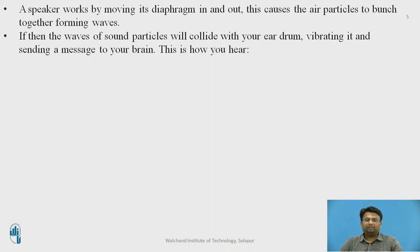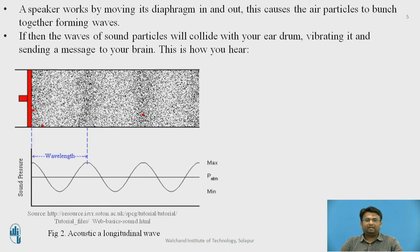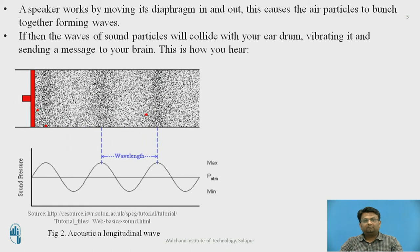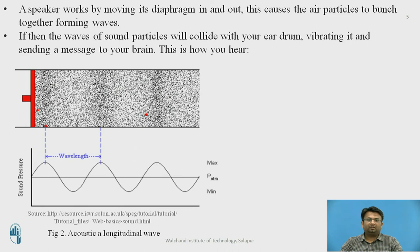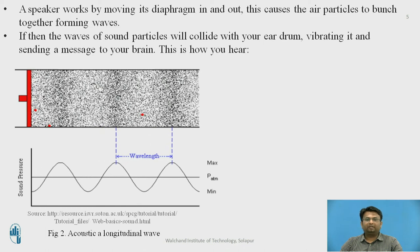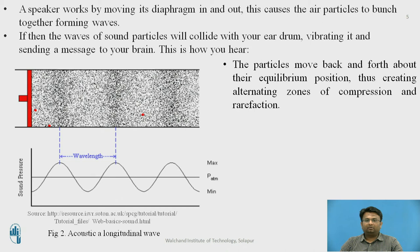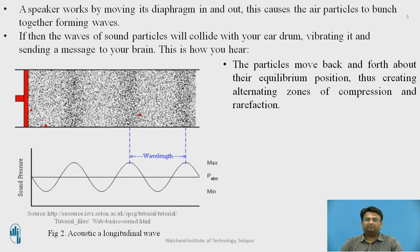When the waves of the sound particles collide with your eardrum, vibrating it and sending the message to your brain — this is how you hear the sound. As you can see from the diagram, the diaphragm is moving in and out, the air particles get vibrated, creating rarefaction and compression, and the sound wave is transmitted through the air medium. The particles move back and forth about the equilibrium position, thus creating alternating zones of compression and rarefaction.